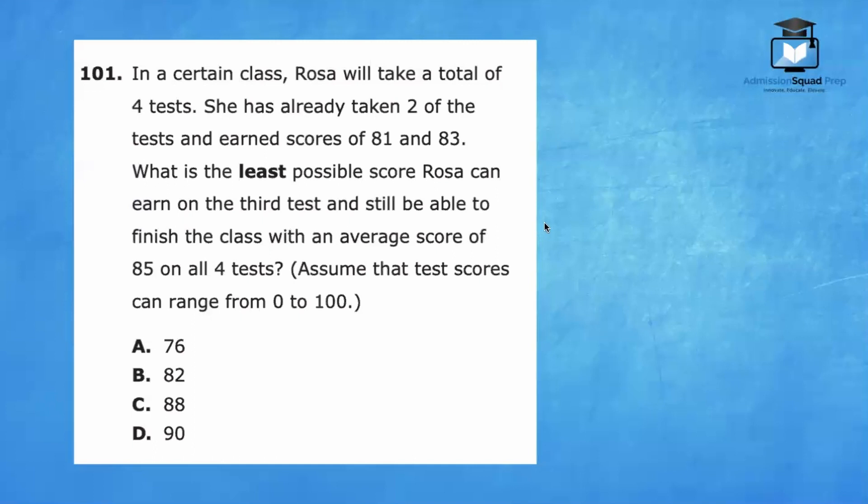101. In a certain class, Rosa will take a total of four tests. She has already taken two of the tests and earned a score of 81 and 83. What is the least possible score Rosa can earn on the third test and still be able to finish the class with an average of 85 on all four tests? Assume that test scores can range from zero to 100. Rosa's goal average is 85. So we know that the sum of all four tests divided by four must be equal to 85.